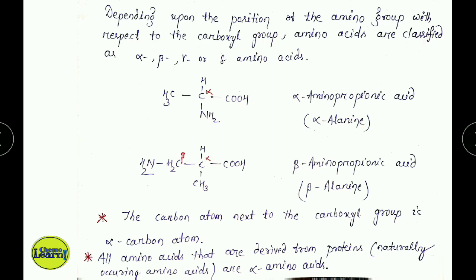This is alpha-alanine — an alpha amino acid where COOH and NH2 are attached to the same alpha carbon. But beta-alanine is different: the NH2 is attached to the beta carbon. You should remember that all naturally occurring amino acids — all 20 of them — are alpha amino acids.